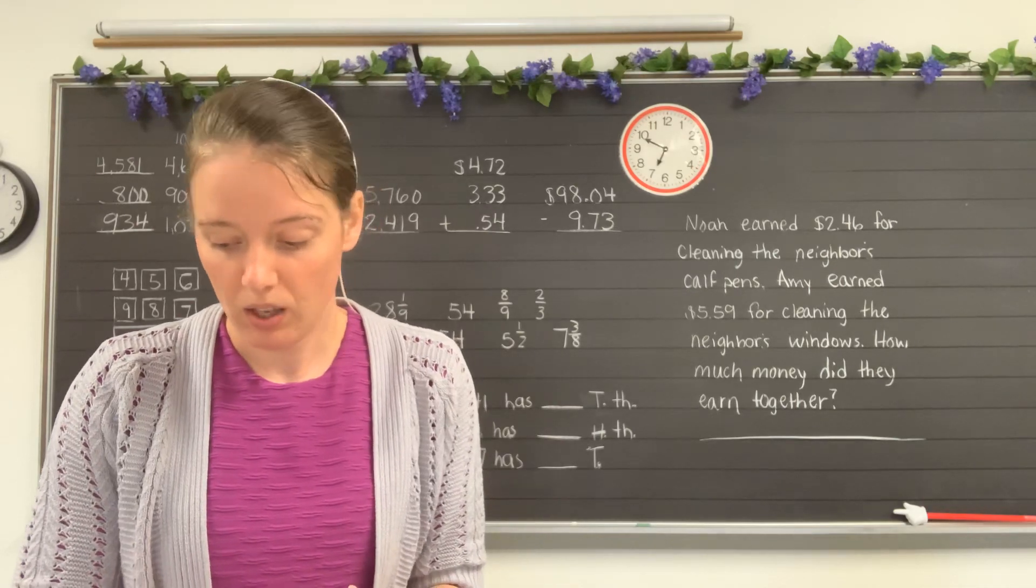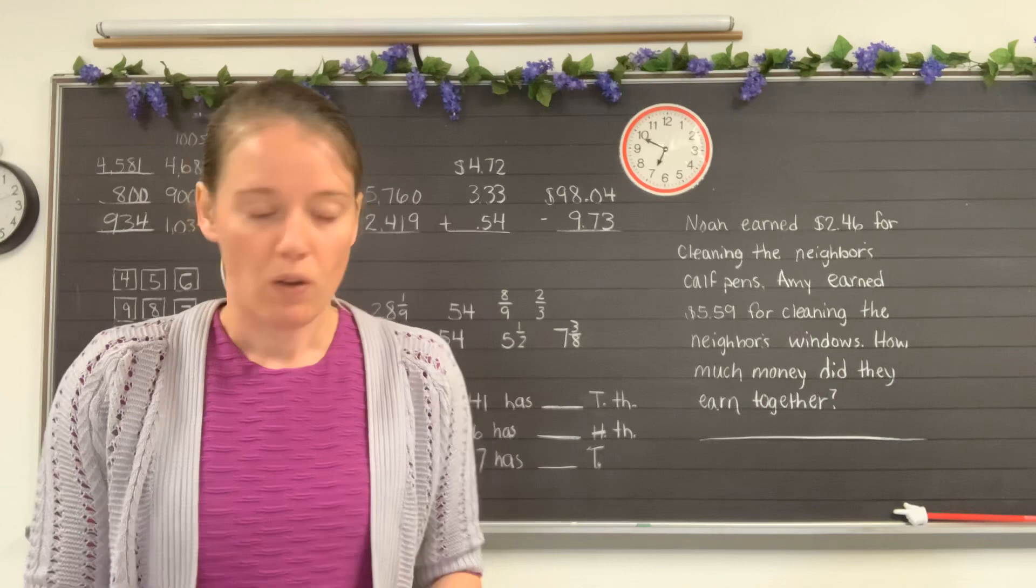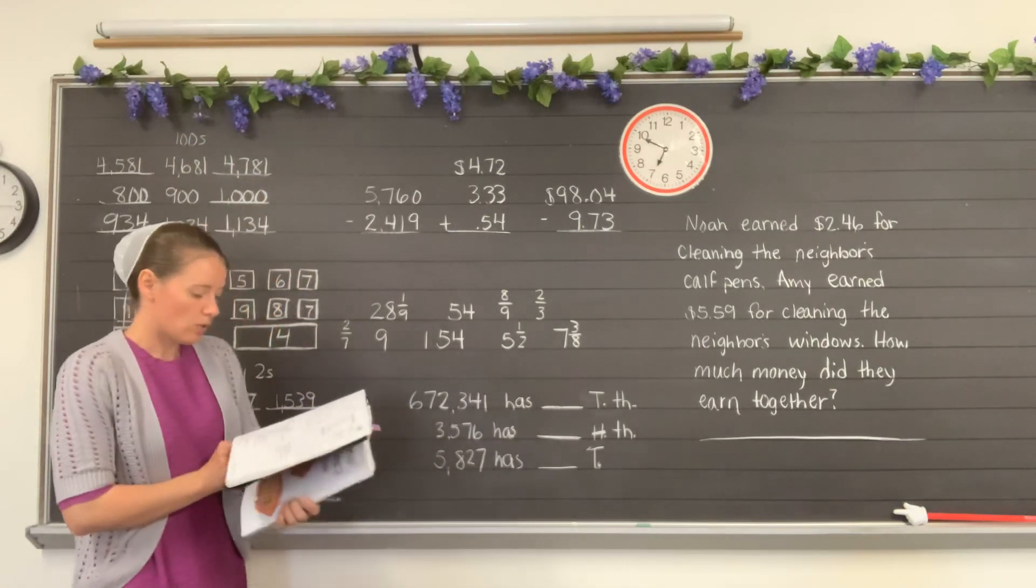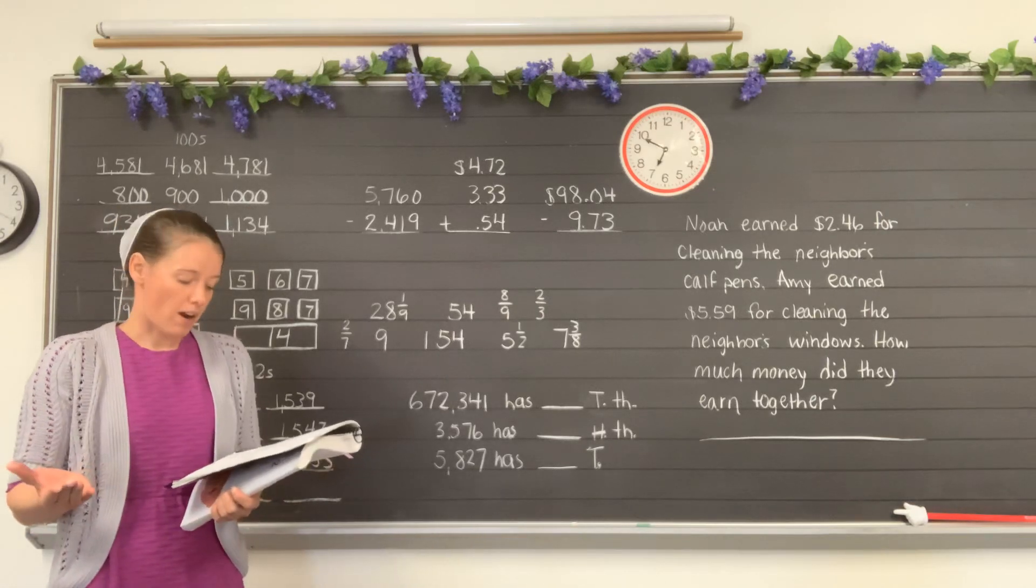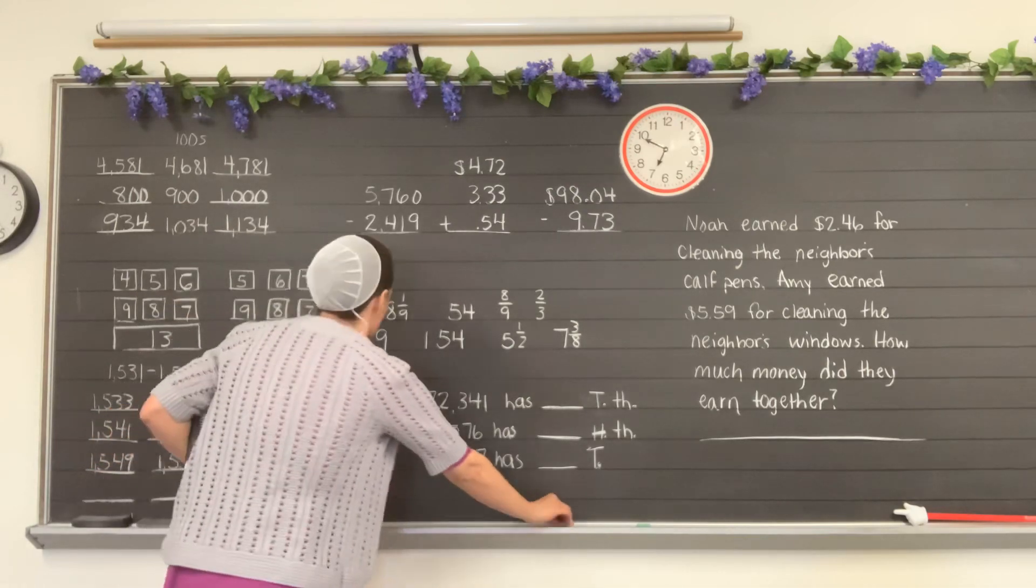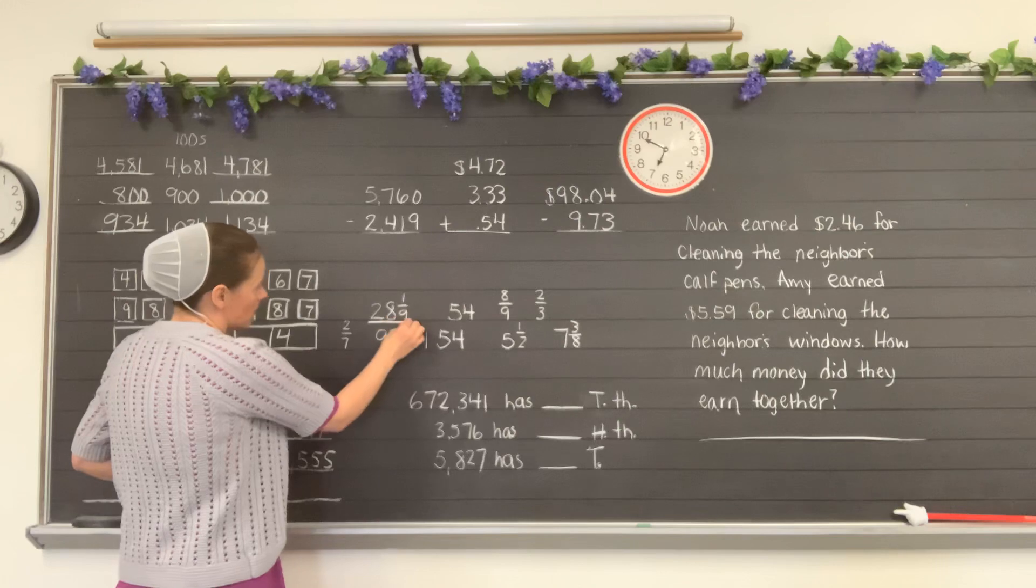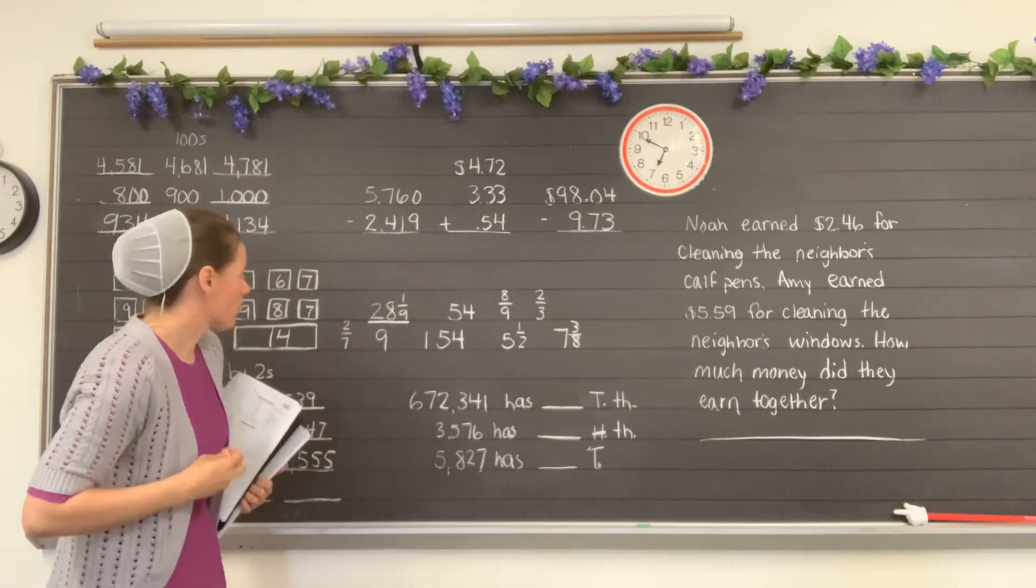So thinking about mixed numbers and fractions and whole numbers, we have some here on the board and we want to circle the whole numbers, box the fractions, and underline the mixed numbers. This would be a mixed number, 28 and 1 ninth. It's a mixed number because it's mixed with a whole number and a fraction, so we call that a mixed number.